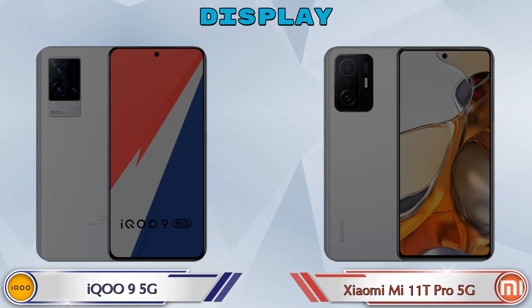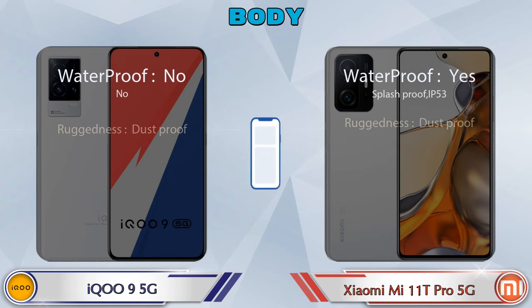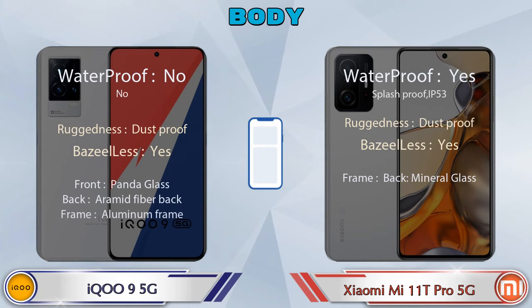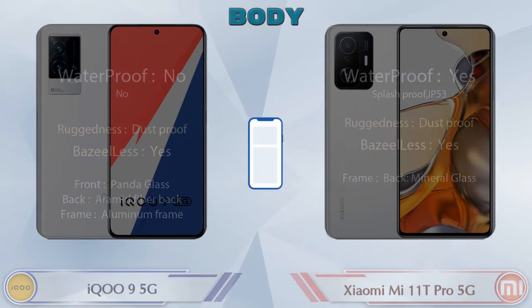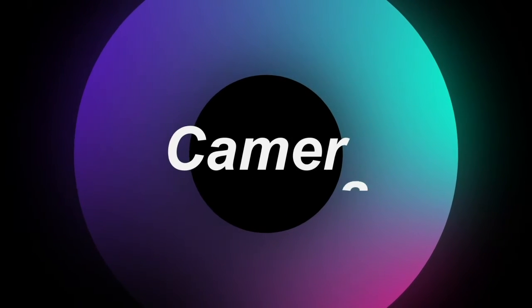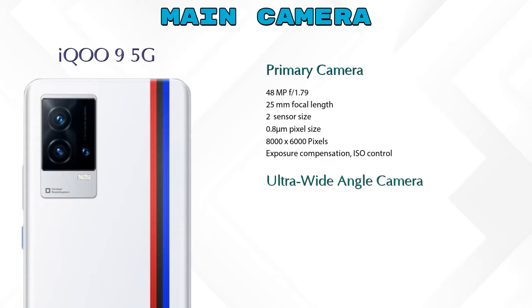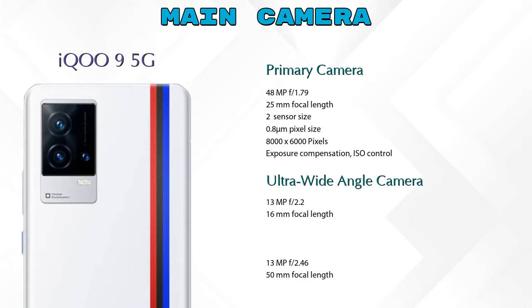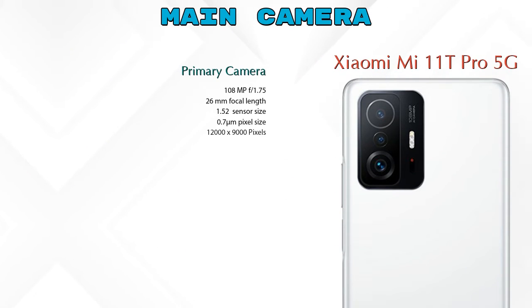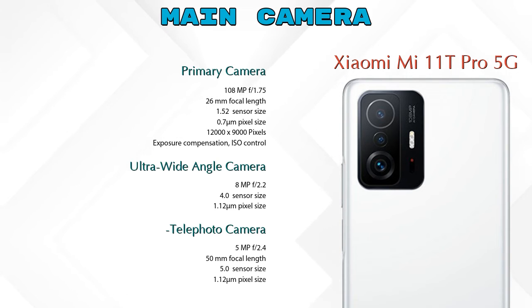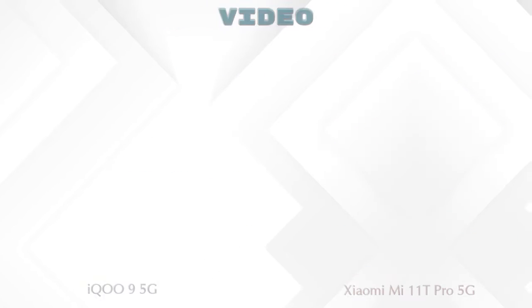Now let's see the complete detail of the body of both phones. Let's also look at the camera. The iQOO 9 5G has three rear cameras: a primary camera and an ultra-wide angle camera. The Mi 11T Pro 5G also has three cameras: a primary camera, an ultra-wide angle camera, and a telephoto camera.